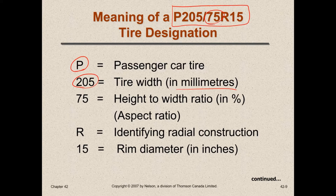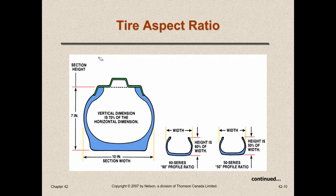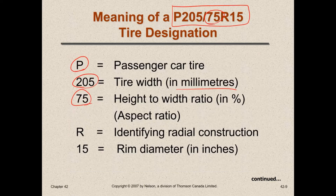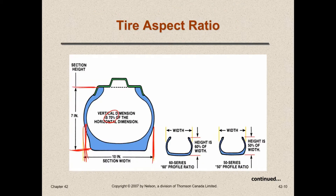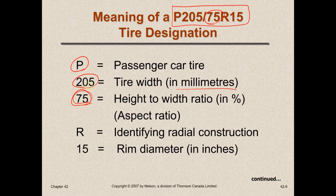The next number, 75, has to do with the height-to-width ratio. If we take this ratio — let's say the width of the tire is 10 inches and the height of the tire from the ground to where it fits into the rim is 7 inches — that would give a 70 percent ratio of the horizontal dimension. So 75 means the height of the tire is 75 percent of the width. Sometimes you hear of low-profile tires — the lower the profile, the lower that number is, depending on the width of the tire also.